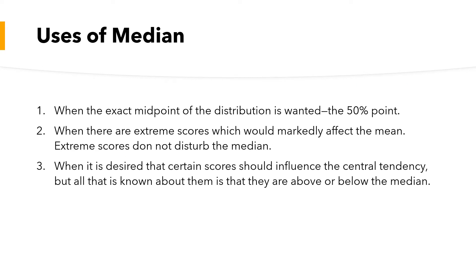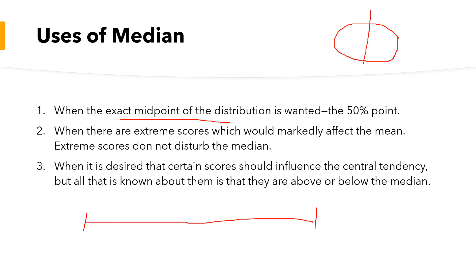If we talk about the median, it is exactly the midpoint. Whenever we have data and want to divide it into two groups, we need the midpoint. For example, if data ranges from a starting point of 12 to a last point of 94, we need a midpoint to split the entire data into two groups — say at a score of 57, we split the data into two groups.